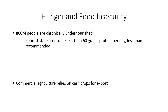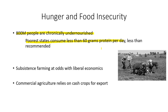On hunger and food insecurity: 800 million people around the world are chronically undernourished. The poorest states consume less than 60 grams of protein per day, which is less than the daily requirement. In many poor countries, subsistence farming — where individual families farm just to survive on a day-to-day basis — is counter to the concept of liberal economics, which calls for industrializing the agricultural system to become major exporters.